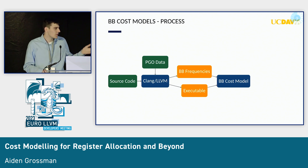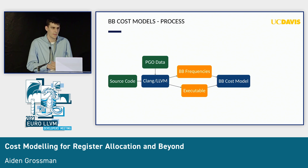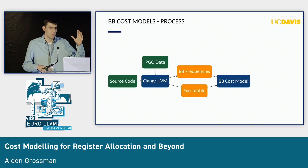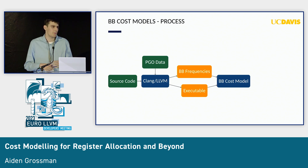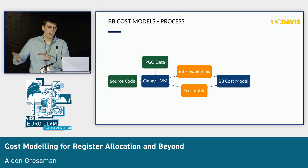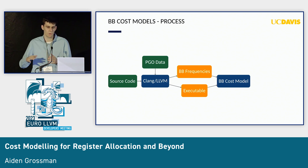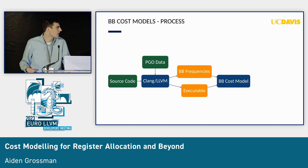Changing up the process a little bit to evaluate it: we're taking source code and PGO data in again. Instead of doing everything in the compiler, we're taking basic block frequencies and emitting that after all the compiler transforms, around the time of ASM print, and also getting an executable. We feed that into the basic block cost model — extracting all the basic blocks from the executable, finding latencies, then multiplying by machine basic block frequencies to get an overall cost for the small applications we're looking at.